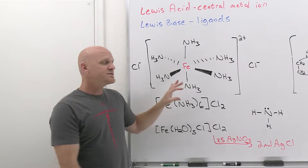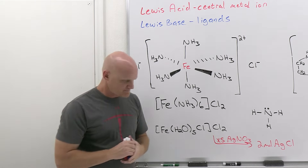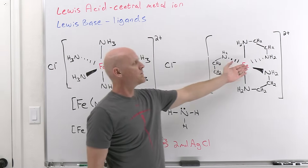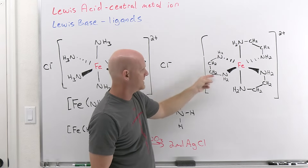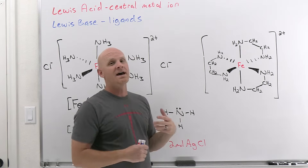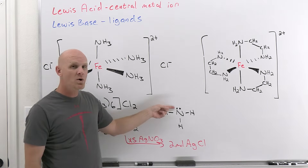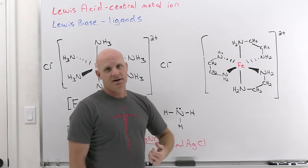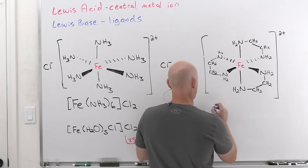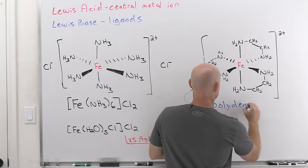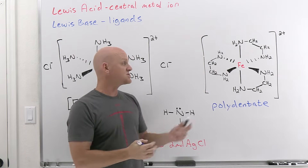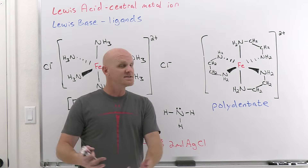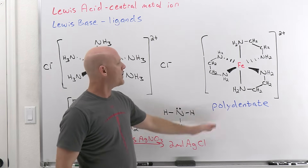What's inside the coordination sphere versus what's outside is very important. It turns out we've also got some ligands that can make more than one bond. In this case we've only got three ligands — this is ethylenediamine, with two nitrogens separated in space. Both of those nitrogens have a lone pair, just like ammonia's nitrogen. As a result, one molecule can actually make two bonds to the iron. When this is true, we call it a polydentate ligand, and if it makes two bonds, it's specifically bidentate. Three bonds would be tridentate, then tetradentate, pentadentate, hexadentate, and so on.